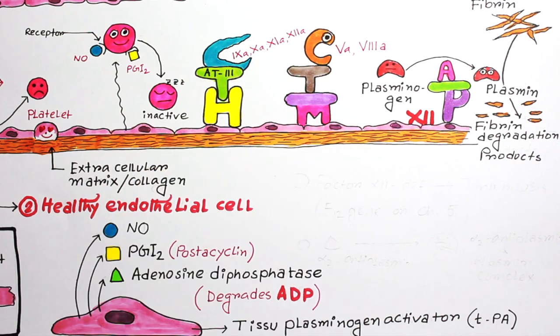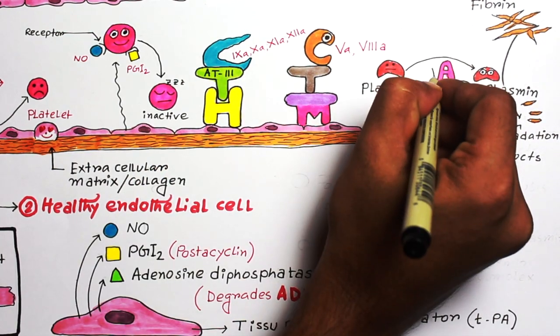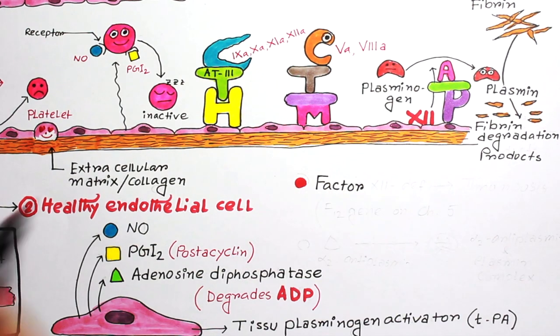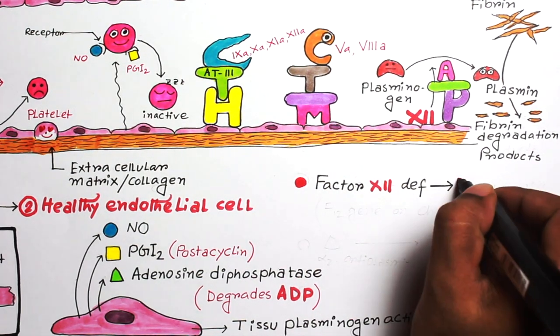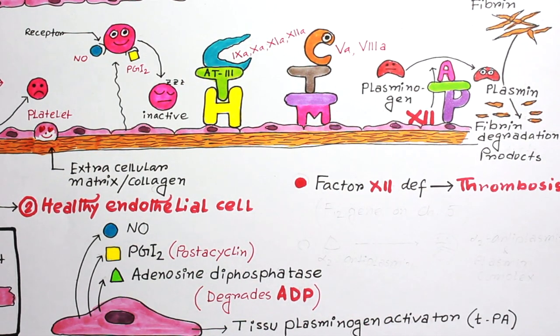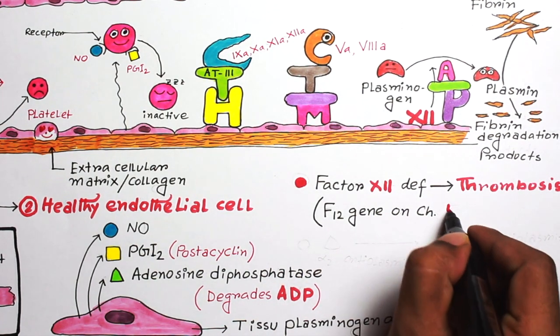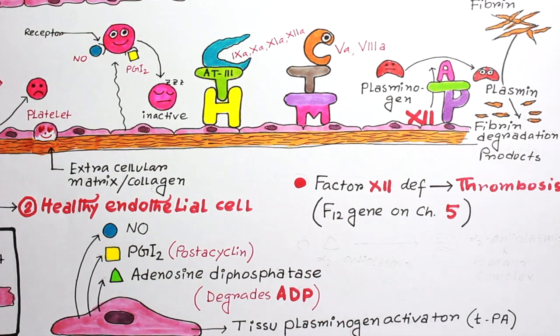Another interesting point is that plasminogen is also activated by the factor 12-dependent pathway. That's why factor 12 deficiency causes thrombosis. It's a rare genetic disorder due to mutation of the F12 gene on chromosome number 5.